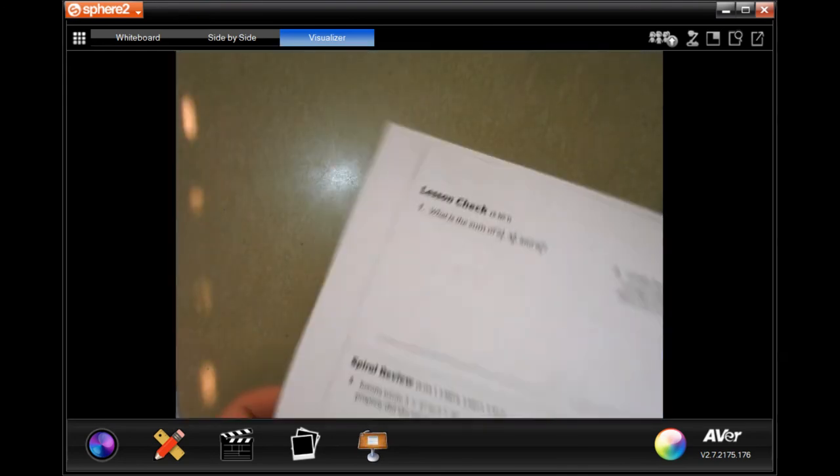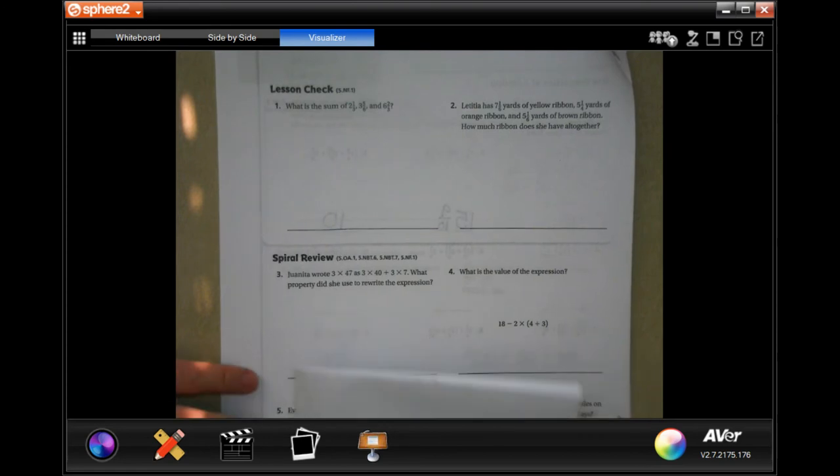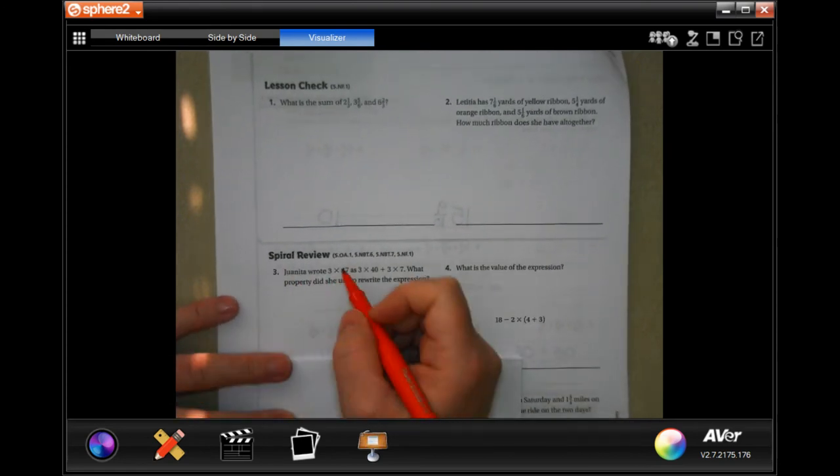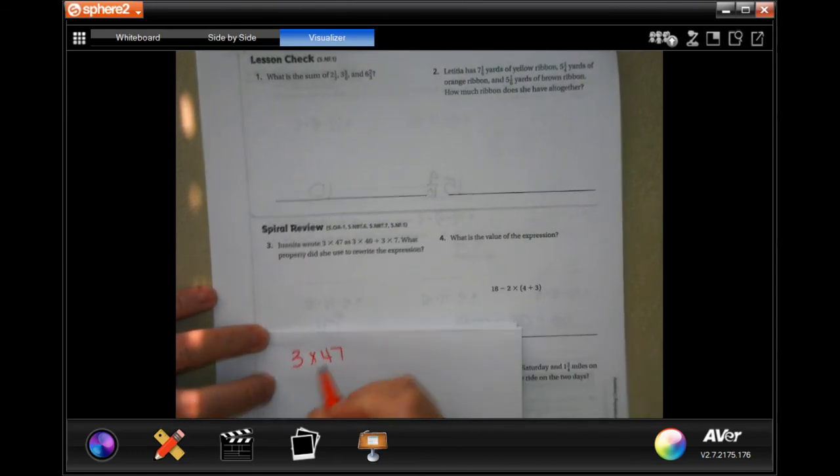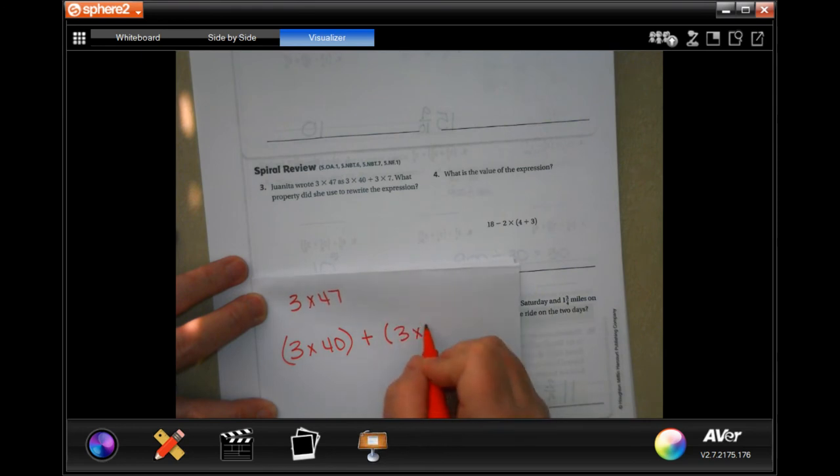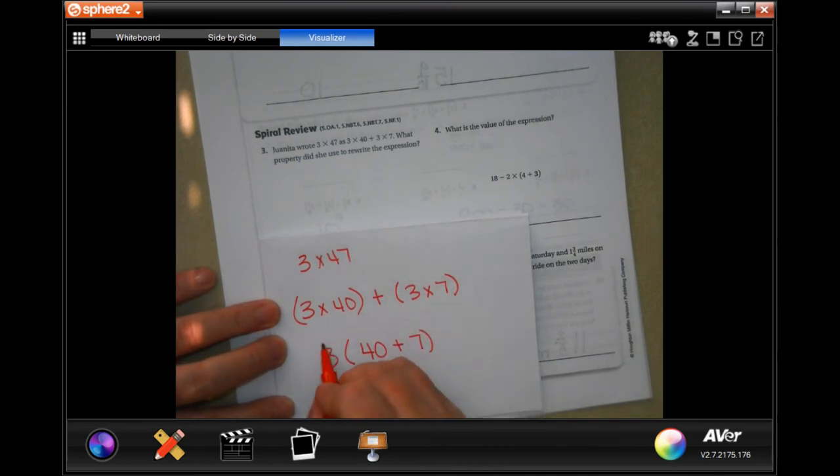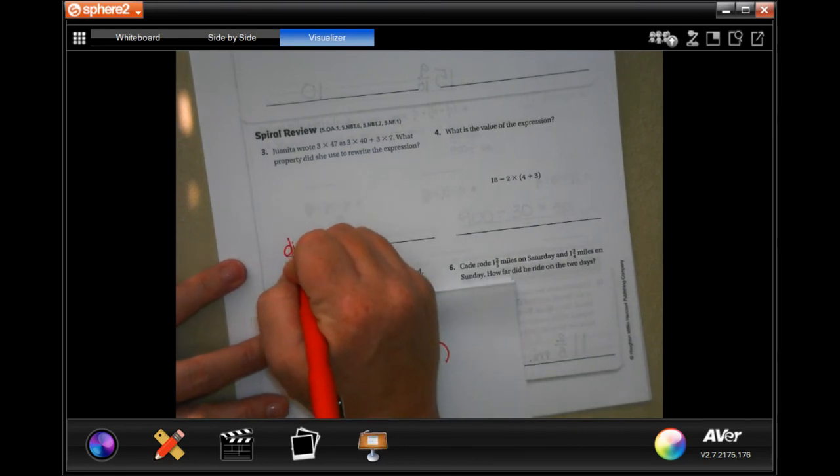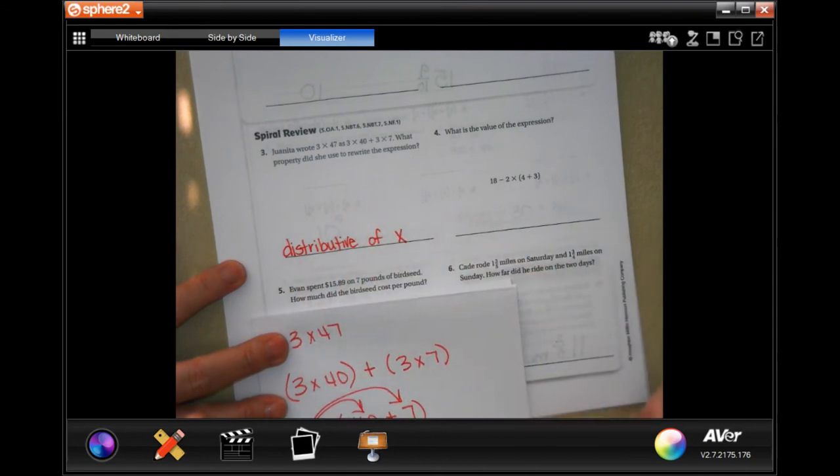We're going to go into the back. You guys are going to do the lesson check. Last lesson check of the chapter, guys. You guys can do this. Then, I'm going to go down to spiral review. Juanita wrote 3 times 47 as 3 times 4 and 3 times 7. What property did she use to write the expression? Well, so all she did is she did 3 times 40 and 3 times 7, right? So, she took the 3 and multiplied it onto the 40 plus 7, distributing that 3 onto the 40 and onto the 7. So, distributive of multiplication.